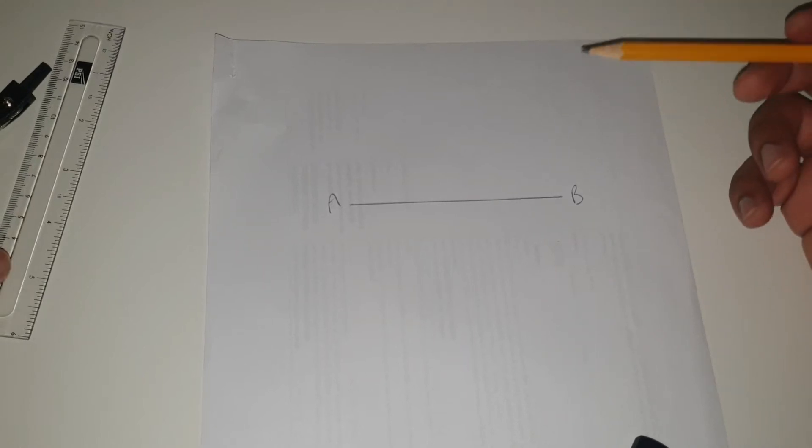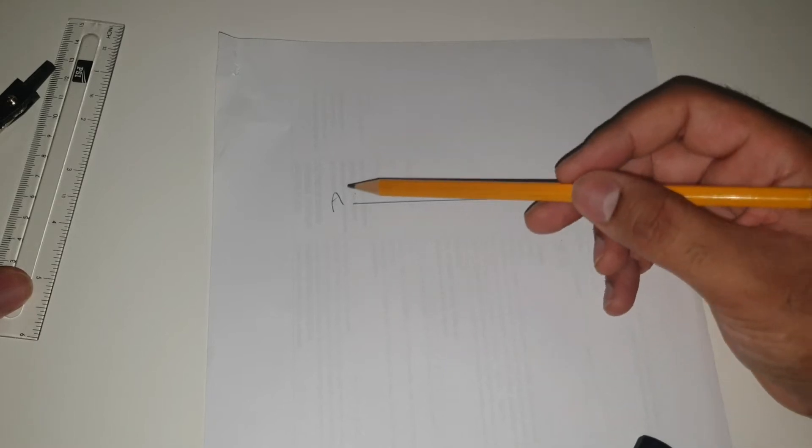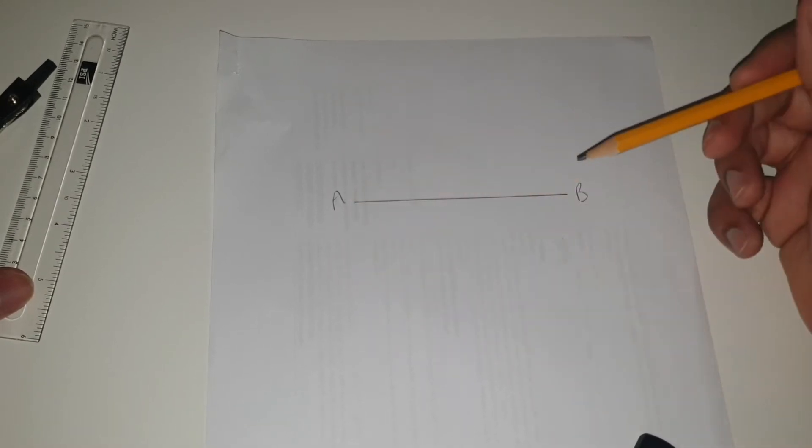In this video, I'm going to show you how to draw the perpendicular bisector of a given line. So as you can see, at each end of the line, there's a letter A and B.